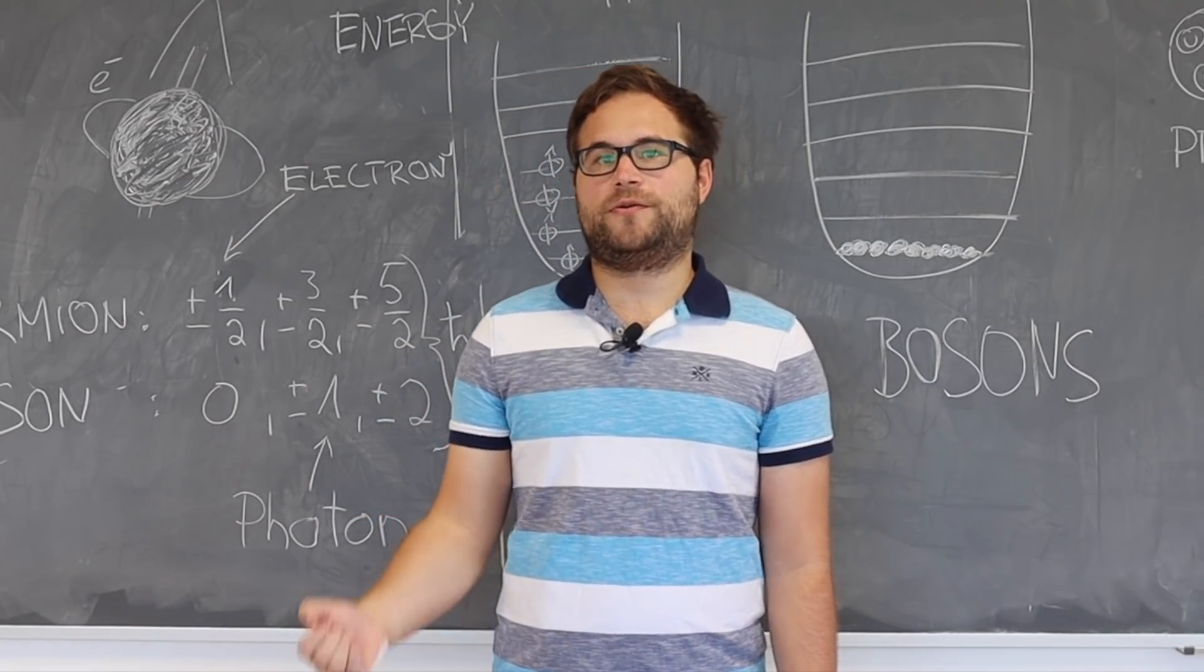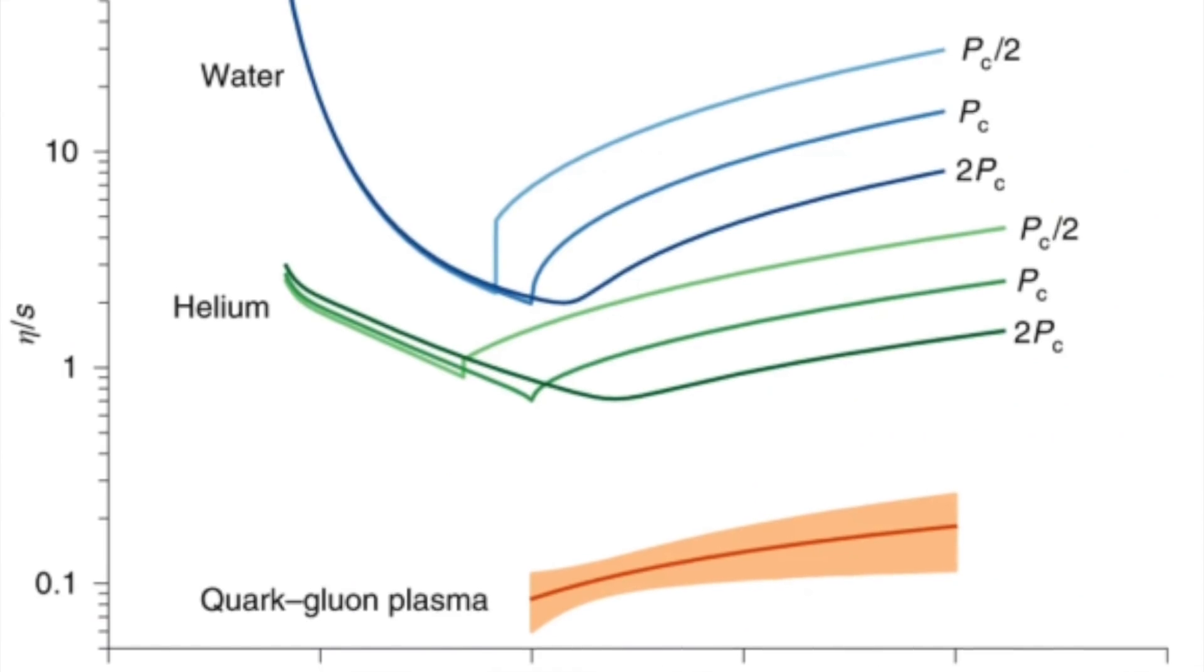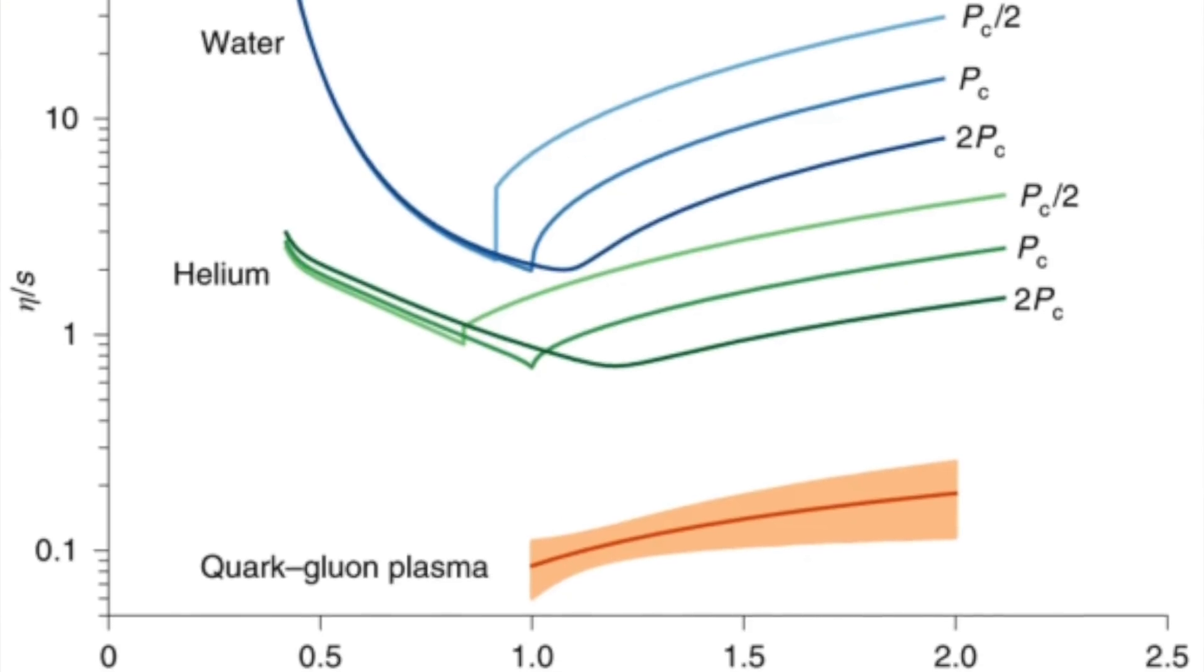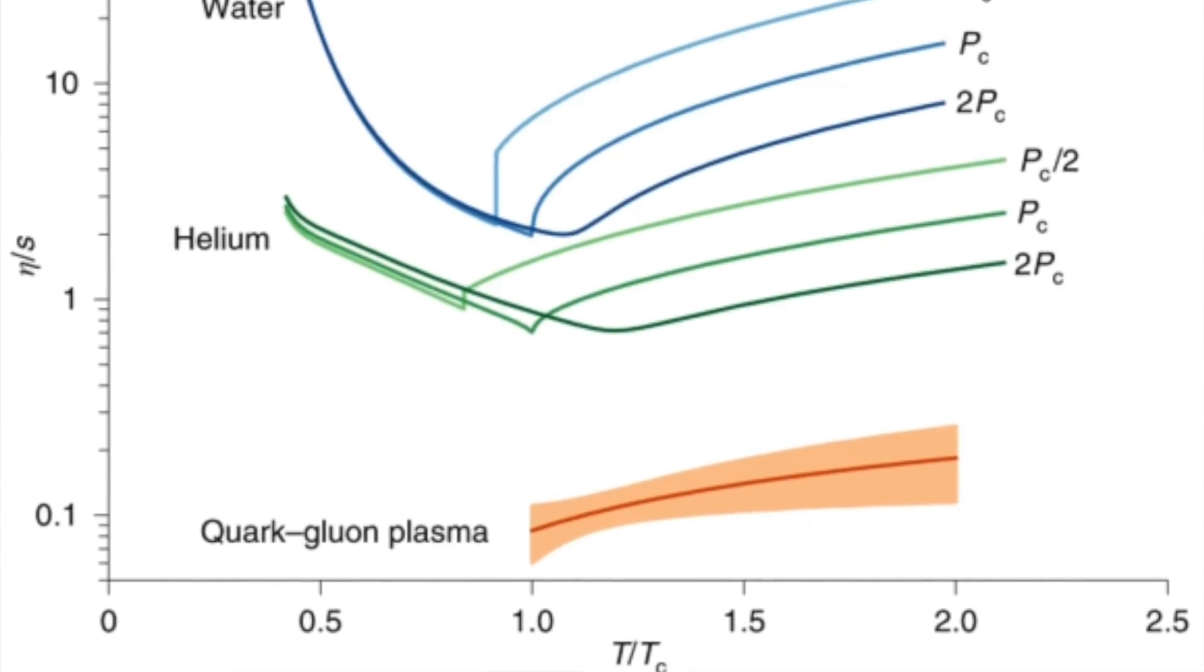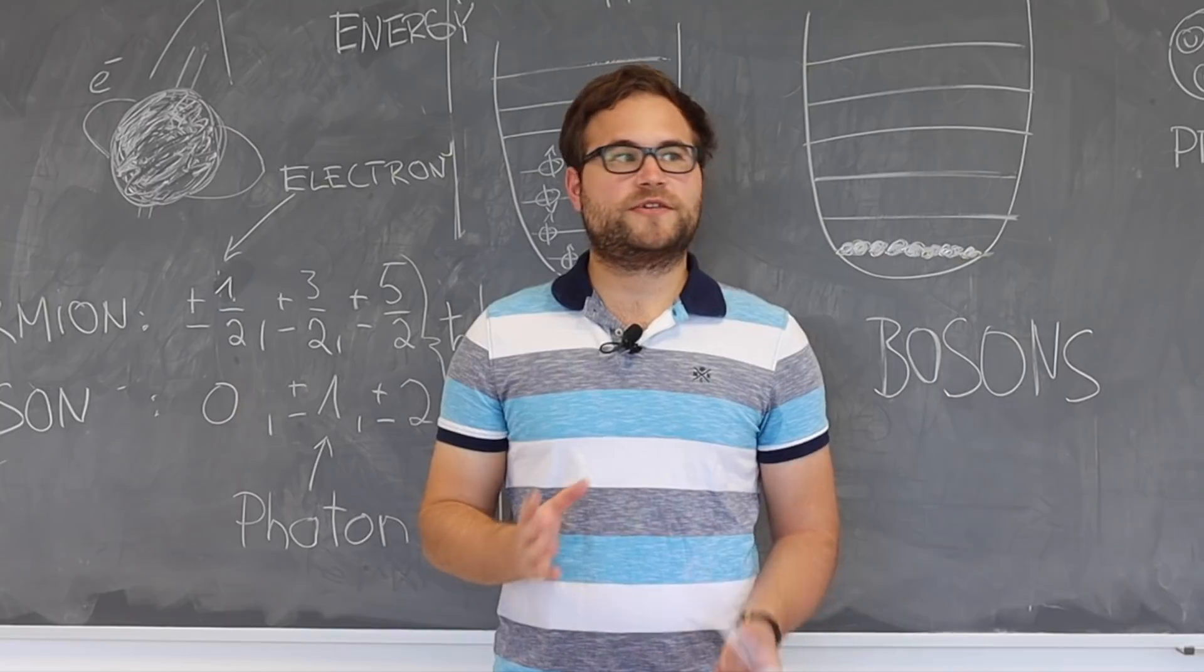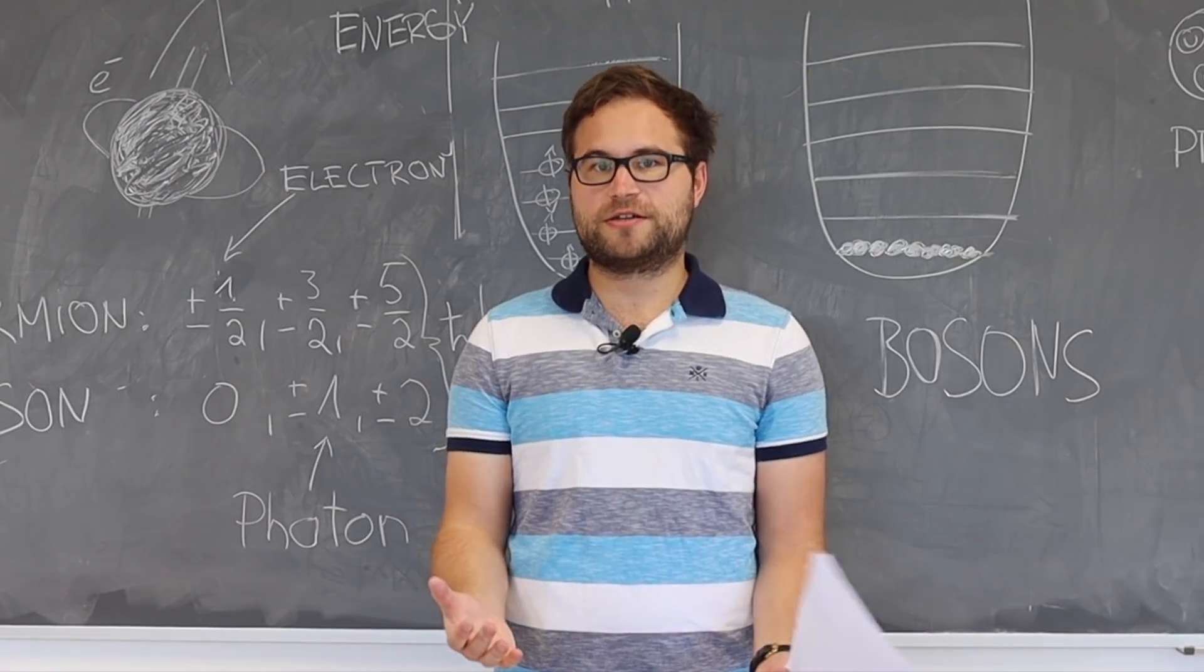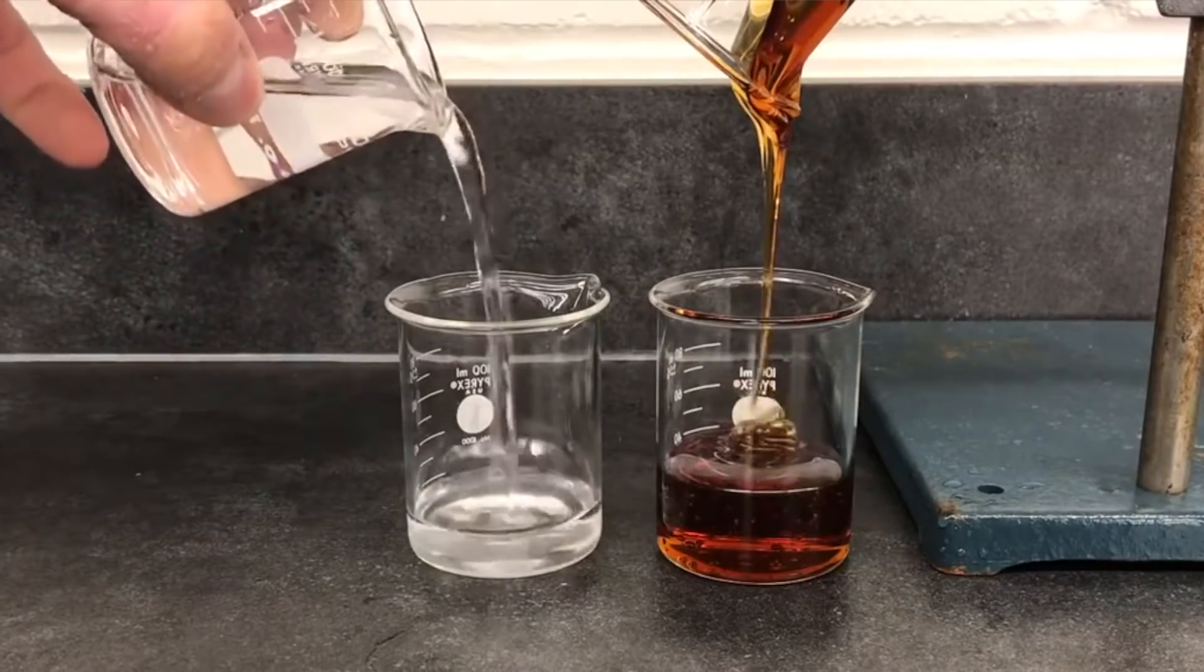The quark-gluon plasma might be the most perfect liquid we know because of its very very low viscosity. Viscosity measures the thickness of a material - for example, a syrup has a much higher viscosity than water.